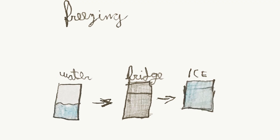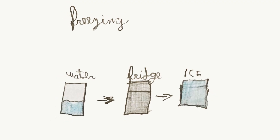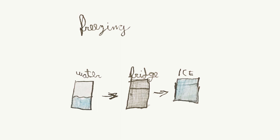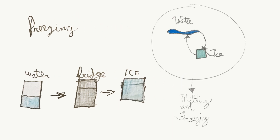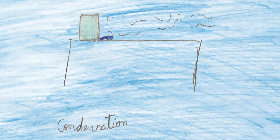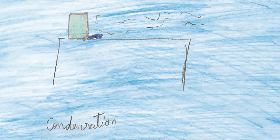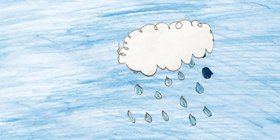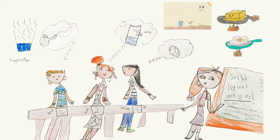The change from liquid to solid is called freezing. To have this change, we need to cool the matter. For example, water to ice. The change from gas to liquid is called condensation. To have this change, we need to cool the matter. For example, from cloud to rain. We can find all these changes through nature and the water cycle!